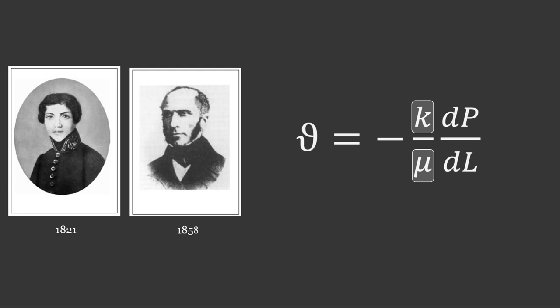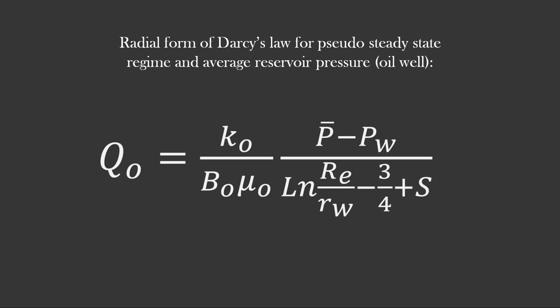This is a general form of it. This law is used to derive other equations to calculate flow rate of oil and gas wells, of course with different conditions and flow regimes. For example, the radial form of Darcy's law for pseudo steady state regime and average reservoir pressure for oil wells.